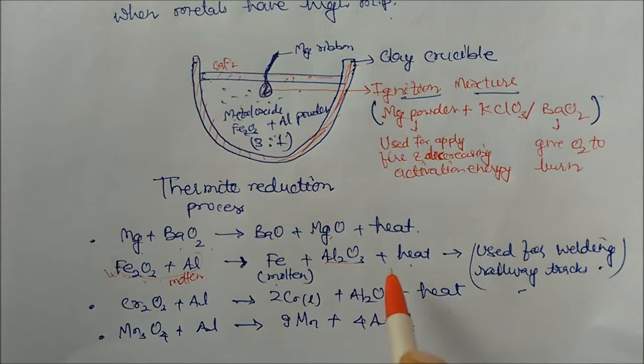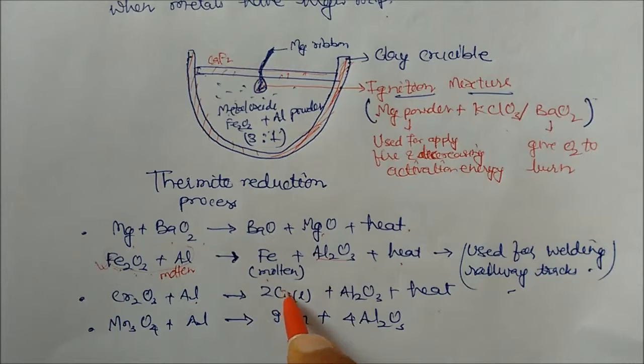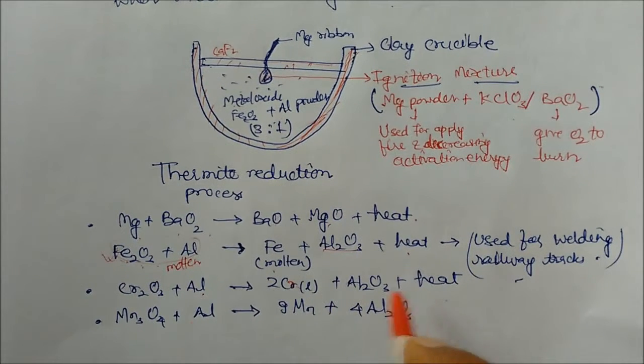So this is again one of the important questions. Now if you take other oxide metals, Cr2O3, again with reactivity with aluminium, they will give you chromium in liquid state, Al2O3 plus heat. Again, if you take Mn3O4, reactivity with aluminium, they will give you manganese and this oxide.